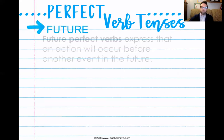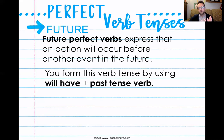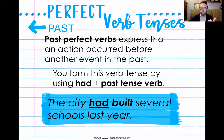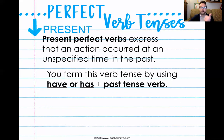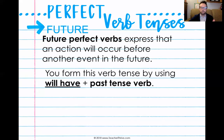Future perfect expresses that an action is going to occur before something else in the future. We form this with 'will have' plus a past tense verb. You'll notice a trend here: past used a past tense verb, present used a past tense verb, and future also uses a past tense verb. What changes is the helping verb that goes with it. Past was 'had' plus a past tense verb — that makes it past perfect. Present perfect: 'have' or 'has' plus a past tense verb. Future perfect: 'will have' plus a past tense verb.